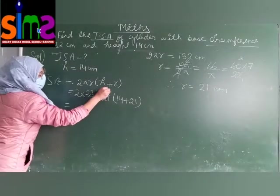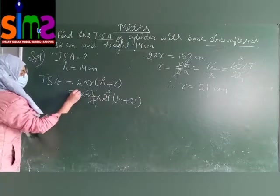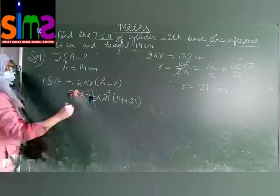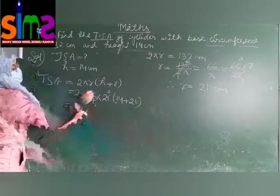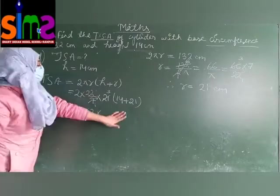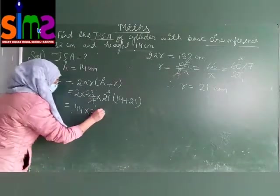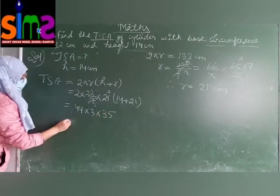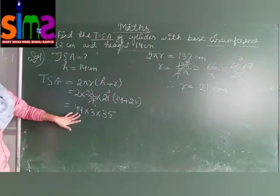Value 14 plus 21. 7 cut by 7, 7 cut by 21. 22 times 2 is 44 into 3 into h plus r is 35. Multiply all these numbers. You will get 4620 centimeter square.